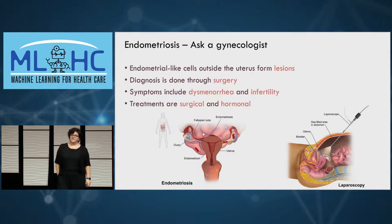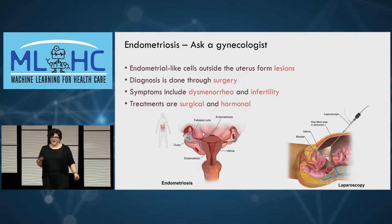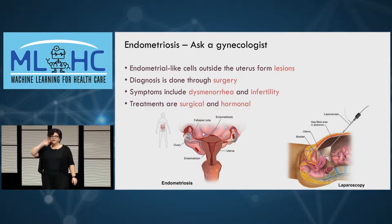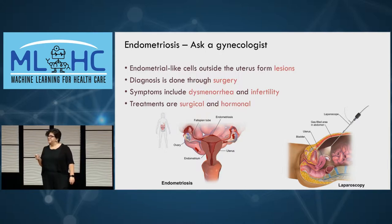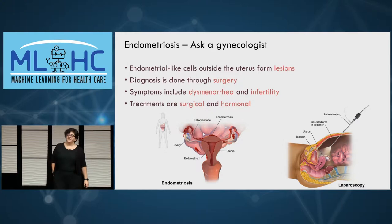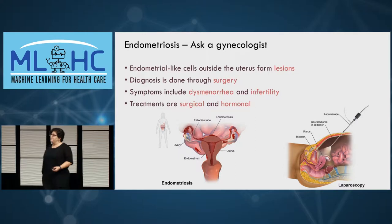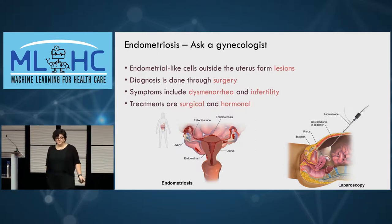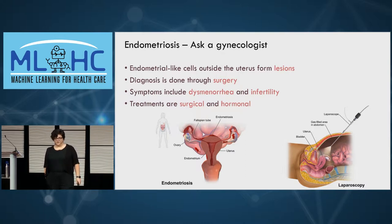I'm going to be talking about a disease called endometriosis. If you were to ask a gynecologist what endometriosis is, they would tell you it's a very mechanistic disease where cells that typically would grow inside the uterus happen to grow outside of the uterus, forming lesions in a woman's body. The only way to diagnose it is through surgery, and symptoms would be dysmenorrhea — pain during a woman's period — and infertility.